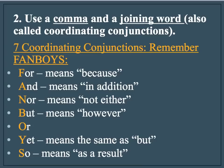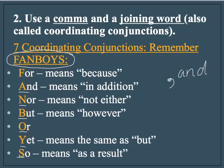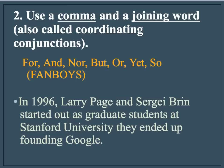Another option is to leave a comma in place or add a comma and a joining word, also called coordinating conjunctions. There are only seven coordinating conjunctions. The acronym FANBOYS can help you remember them: F is for FOR, A is for AND, N is for NOR, B is for BUT, O is for OR, Y is for YET, and S is for SO. You can use a comma with one of these joining words or coordinating conjunctions, and that will fix a fused sentence or a comma splice. Here's an example — back to our same sentence. In 1996, Larry Page and Sergey Brin started out as graduate students at Stanford University, and they ended up founding Google. Now we have corrected this error.